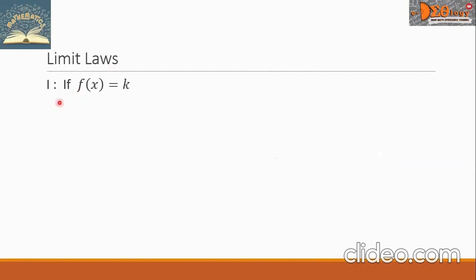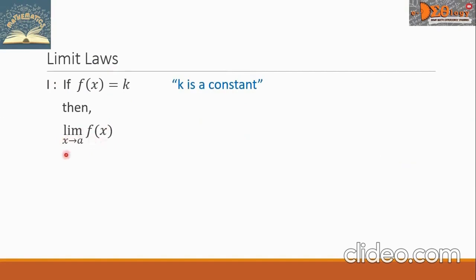The first law is here: if the function f of x equals k, where k is a constant, then the limit of f of x as x approaches a can be rewritten as the limit of k as x approaches a, and we can simplify this into k. Remember that this k is the function itself.